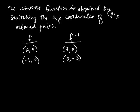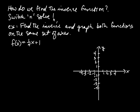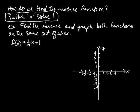So how do you find the inverse if you have a function f that's one-to-one? We use what's called the switch-and-solve technique. Switch and solve is our technique for finding the inverse of a function. Let's illustrate how that works with an example: find the inverse and graph both functions on the same set of axes.